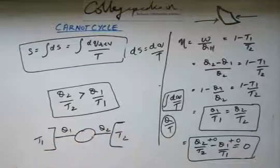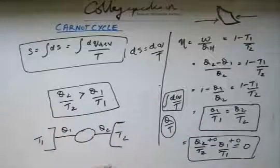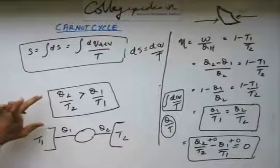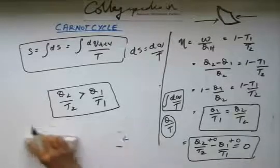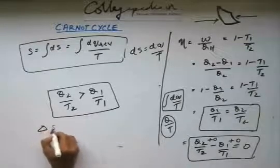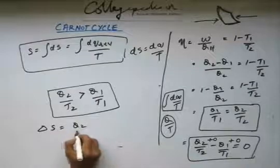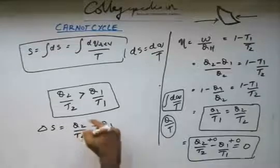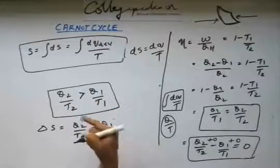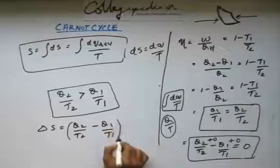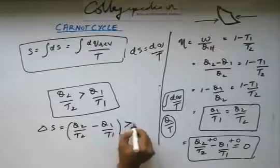So the whole change in entropy of the whole system will be entropy gained minus entropy lost. So total entropy delta S is equal to Q2 by T2 minus Q1 by T1 and from the above equation in the inequality, we can see that this Q2 by T2 minus Q1 by T1 is greater than 0.